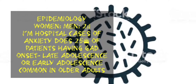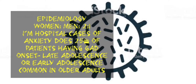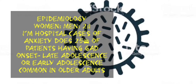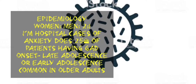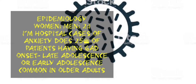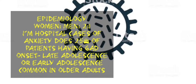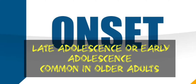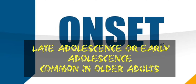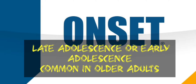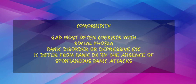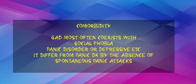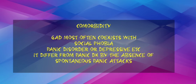Epidemiology: the estimated ratio of women to men is 2 to 1. In hospital cases of anxiety disorders, around 25% of patients have generalized anxiety disorder. The onset is in late adolescence or early adulthood, even though it is more common among older adults. Comorbidity: generalized anxiety disorder most often co-exists with social phobia, panic disorder, or depressive disorder.